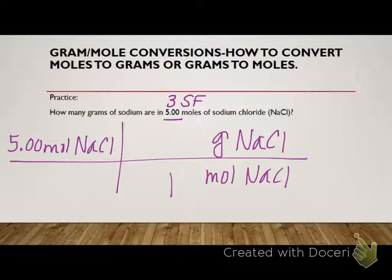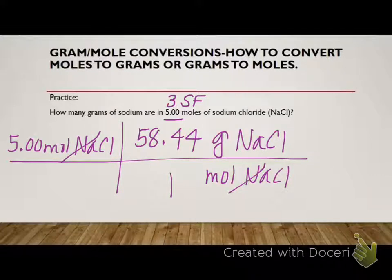One mole, because it's always grams per one mole. I need to find the molar mass of sodium chloride. So I'm going to take sodium, which is 22.99 and I'm going to add chlorine, which is 35.45 and I should get 58.44 grams of sodium chloride per one mole. So now my moles cancel out and I need three significant figures and so that should, hopefully if you're doing it correctly, get 292 grams of sodium chloride.